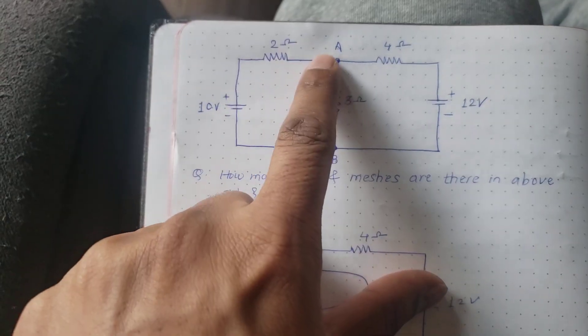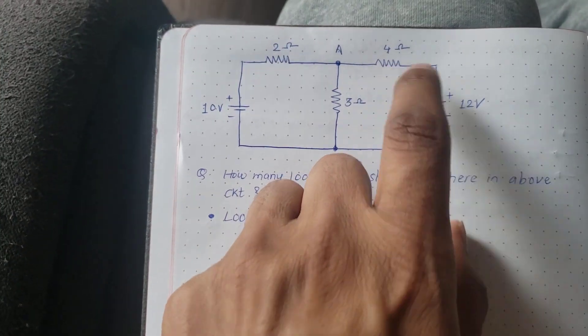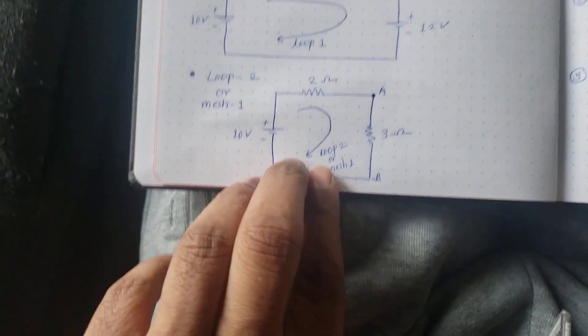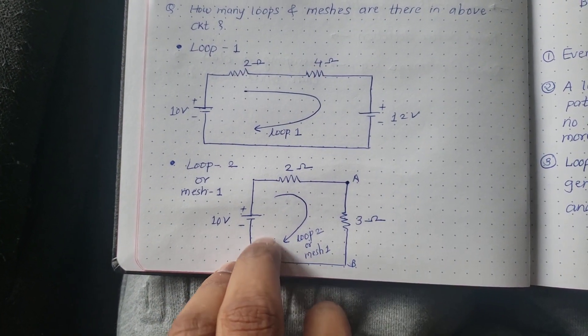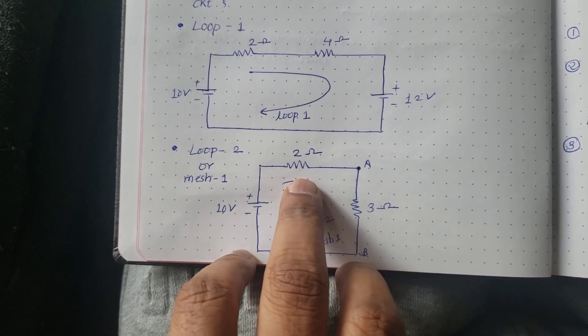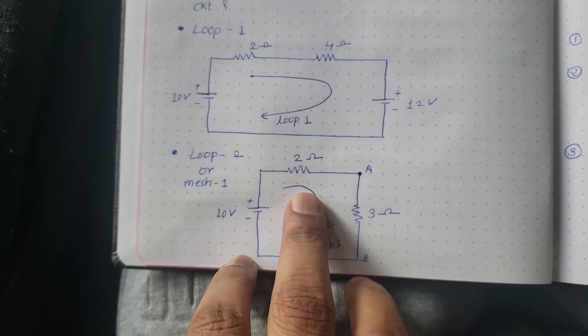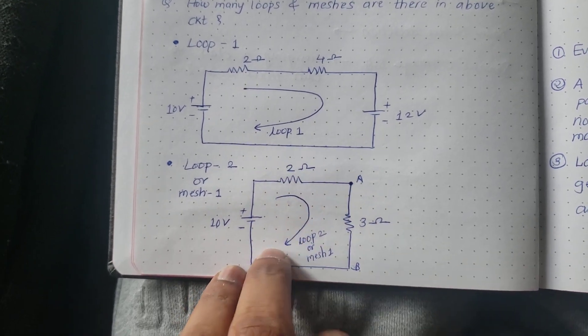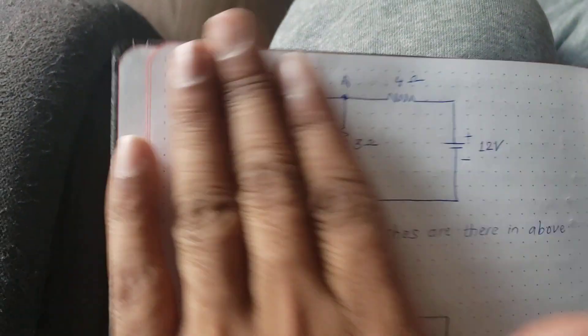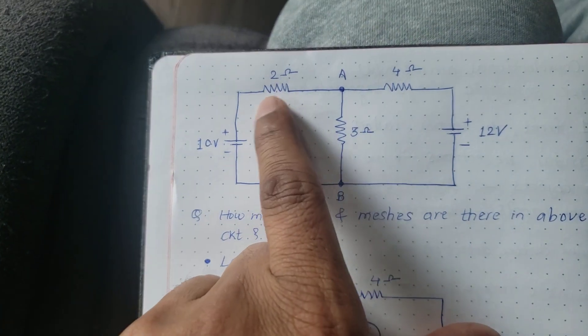Now second thing what I'm considering: I'm considering only the left hand side of the circuit. I'm just ignoring four ohm resistance and 12 volt battery. You can see here I have two ohms, points A and B or nodes A and B, and 10 volt battery. I can call this as loop two or mesh also, mesh one.